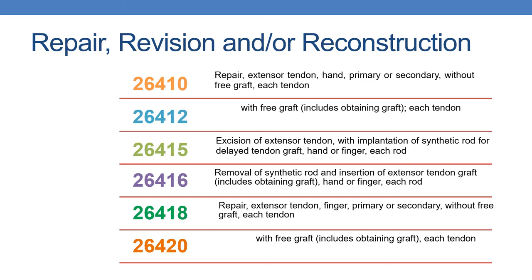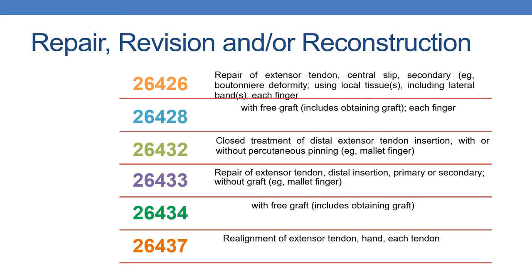The next CPT is 26410: repair extensor tendon, hand, primary or secondary without free graft. With free graft is given by 26412. Next is 26415: excision of extensor tendon with implantation of synthetic rod for delayed tendon graft. Next is 26416: repair extensor tendon graft. Next is 26418: repair extensor tendon, finger, primary or secondary without free graft. With free graft it is reported with 26420. Next CPT is 26426: repair of extensor tendon, central slip secondary, using local tissue, including lateral band, each finger. With free graft it is reported with 26428.